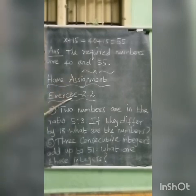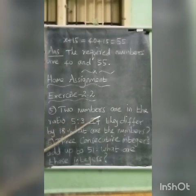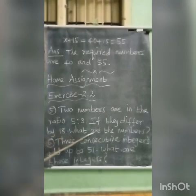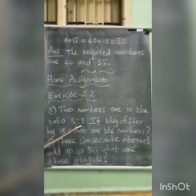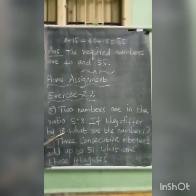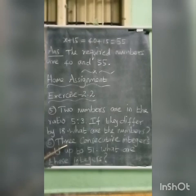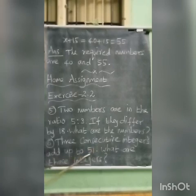Home assignment: Exercise 2.2. Fifth sum — two numbers are in the ratio 5 is to 3. If they differ by 18, what are the numbers? Sixth sum — three consecutive integers add up to 51. What are these integers?